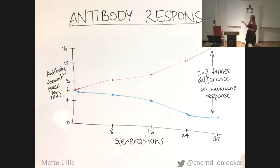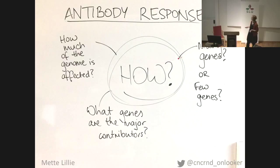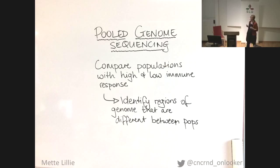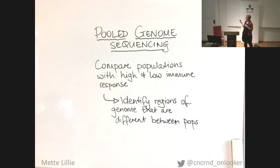So what we have, just in generation 32, we already have a seven-fold difference in the immune response. And that's kind of amazing. But how is this happening? How many genes are involved? How much of the genome is involved? What are the key genes involved in this? We're using pooled genome sequencing. Basically, we can compare the populations that have a high response and a low response. By comparing their genes, we can identify regions that are very, very different, and these are probably contributing to the differences in these immune responses.